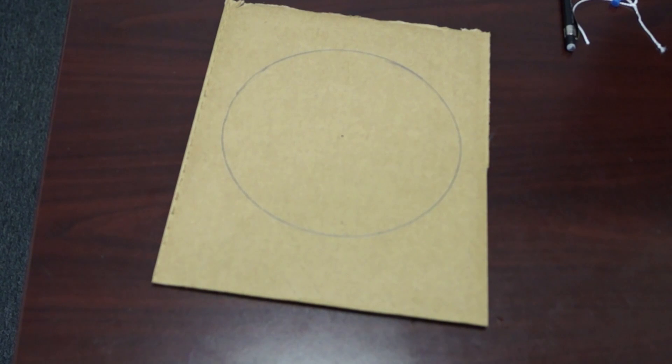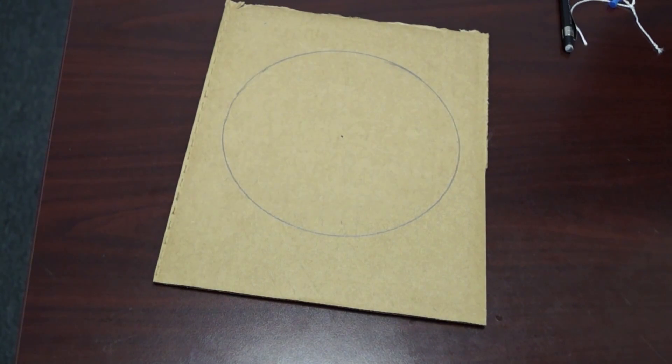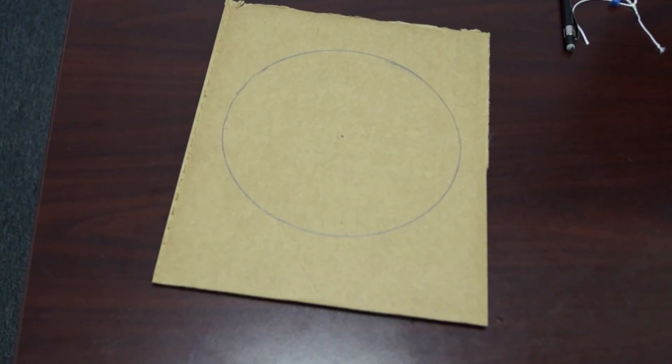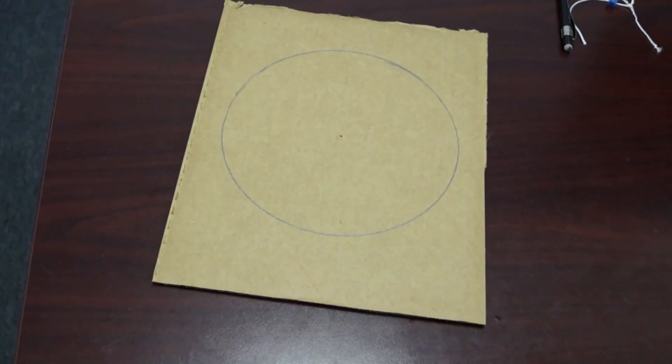So what we're going to do now is we're going to go ahead and cut out our circle. So there are a couple of different ways you can do that. You can either use a pair of scissors, a knife. I wouldn't recommend using a knife if you're a small child. Use adult supervision if you do decide to go that route. What I like to use is an exacto knife.